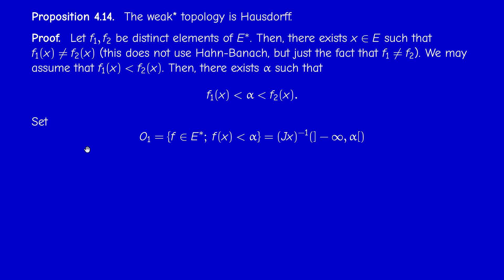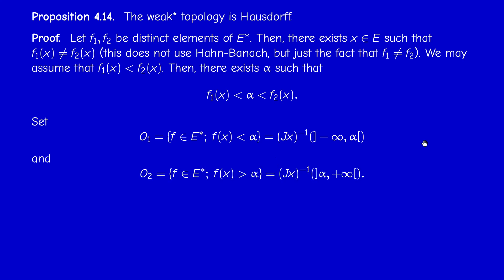Take O₁ = {f ∈ E* : f(x) < α}, which can be written as {f : J(x)(f) < α}, i.e., the preimage under J(x) of (−∞, α). By symmetry, take O₂ = {f ∈ E* : f(x) > α}, the preimage under J(x) of (α, +∞).